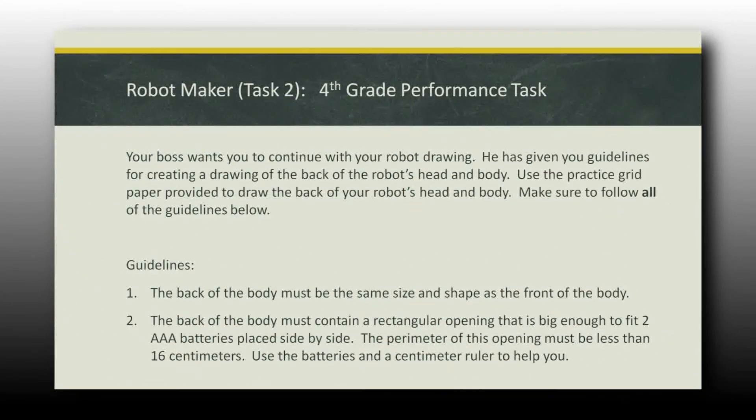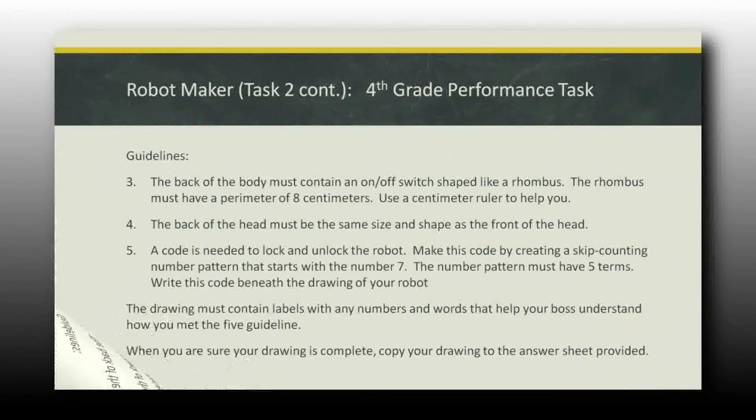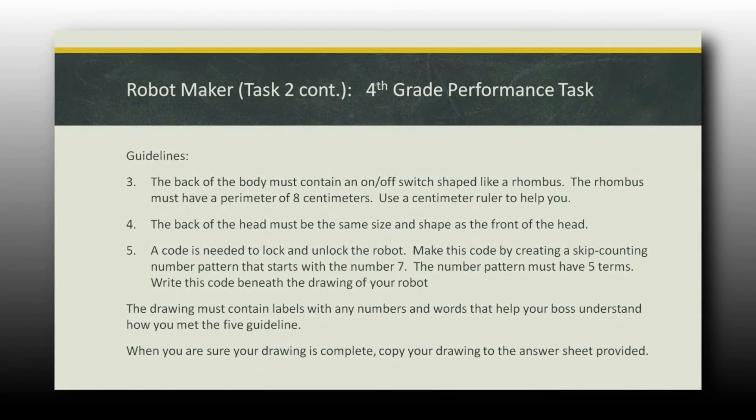Now the second part. Your boss wants you to continue with your drawing your robot. He's given you the guidelines for creating the back of the robot. Well, guess what? You can't have a different shape back than you have a shape front, right? Because it's 3D. So we're going to go ahead and draw the same shapes, same size. But on the back, we need to be able to have an opening to fit two AAA batteries. So I'm going to hand the kids two AAA batteries. They're going to have to measure them and make sure their opening can fit these two AAA batteries. So there's some measurement. The perimeter of the opening must be less than 16 centimeters. So they're going to have to use a ruler to measure.